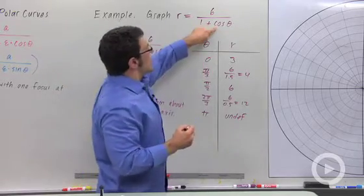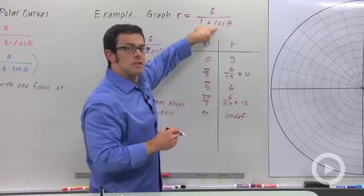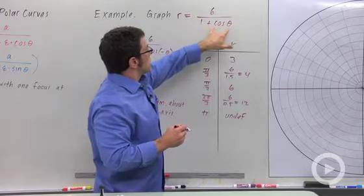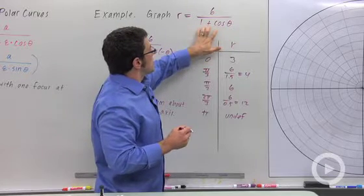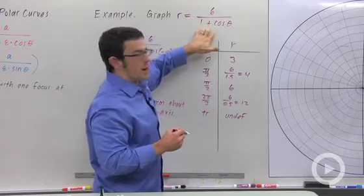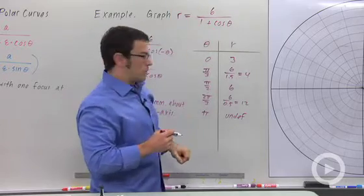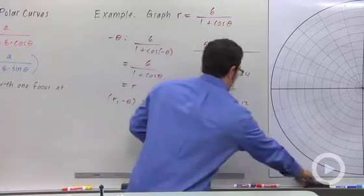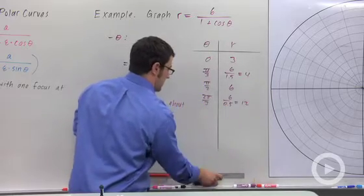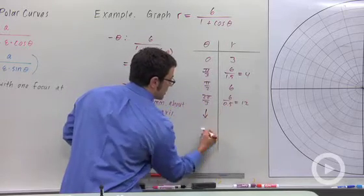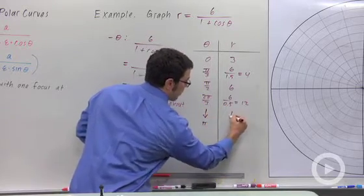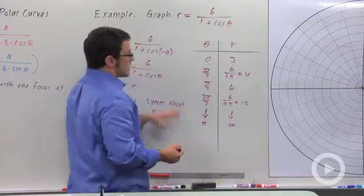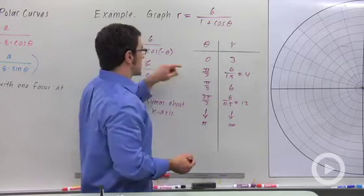But imagine what happens as cosine gets close to negative 1, when it's a little bit short. This will be a small positive number, and so we get 6 over a small positive number. The r value is going to go to infinity. So what actually happens is that as theta goes to pi, r goes to infinity. Let's plot what we have so far.